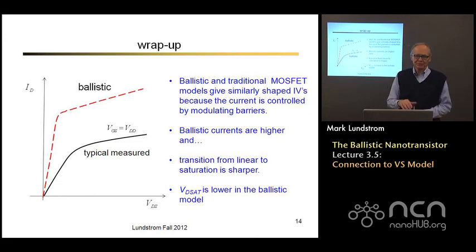So we can wrap up this lecture. We've made this connection between the two theories. The ballistic and the traditional MOSFET models give IV characteristics that have similar shapes, and that's because a transistor operates by controlling current flow by manipulating potential barriers with electrostatics. That's the same in both cases. The ballistic currents are higher because there's less scattering. The transition from the linear to the saturated region is sharper and the saturated velocity is lower. So we have these two expressions, the traditional expression and the ballistic expression.